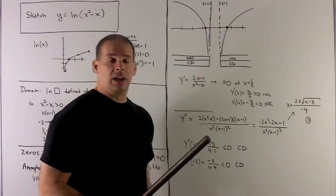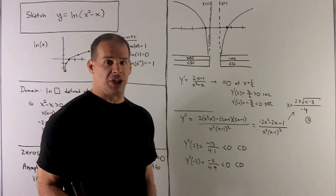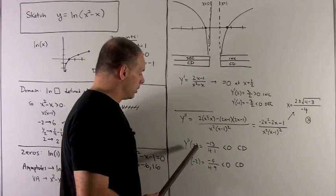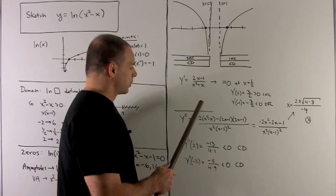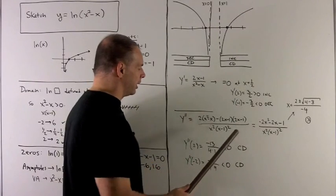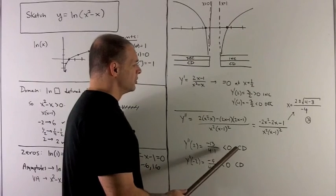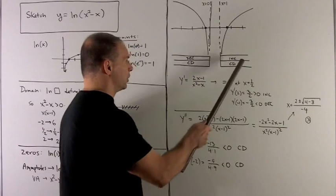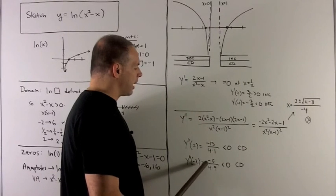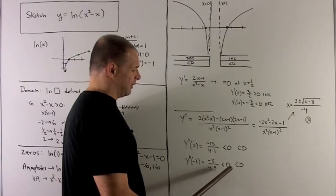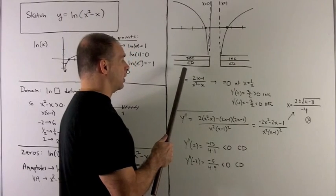So that's going to mean, again, I only need to check one point in each region to check concavity. So I put in 2. We put 2 into this over here, and I get minus 13 over 4, which is negative. So it's concave down on this region over here. If I put minus 2 in, I get a minus 5 over 4 times 9, which is negative. So I'll get concave down on this side also.